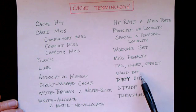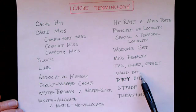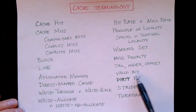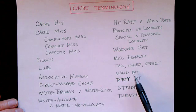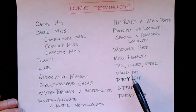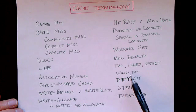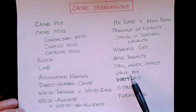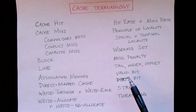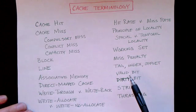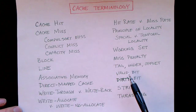The valid bit is also used when we switch from one task or thread to another. Different processes have different address spaces, so what is in the cache for one process will probably not be the right stuff for some other process. When the operating system switches from one process to another, it's also switching from one address space to another, and so it will typically clear the valid bits for the cache, which effectively empties the cache out.